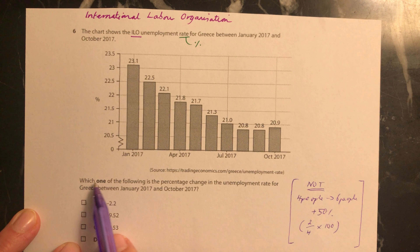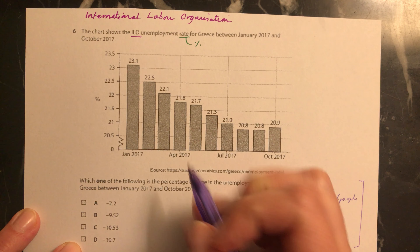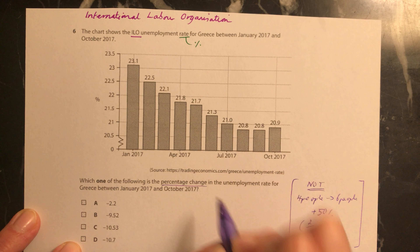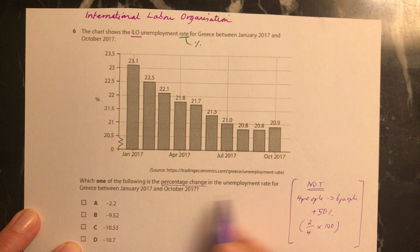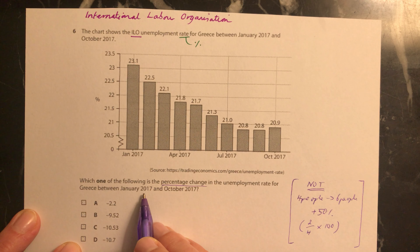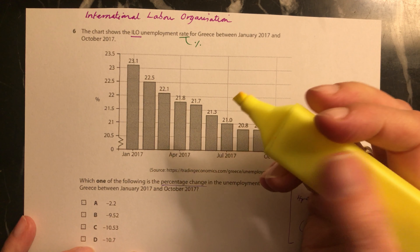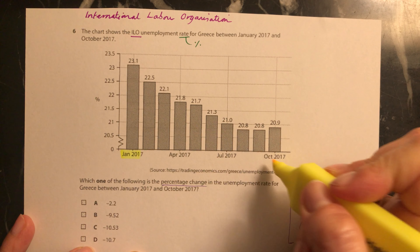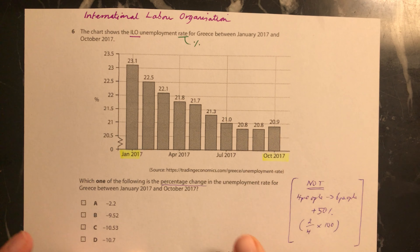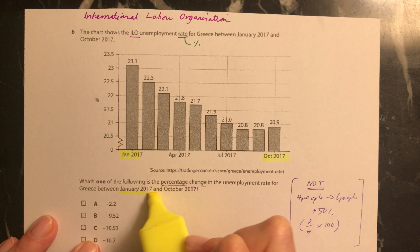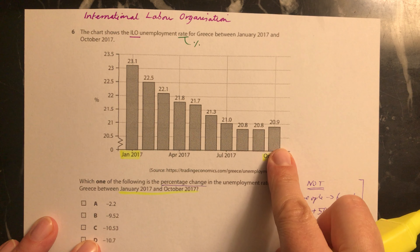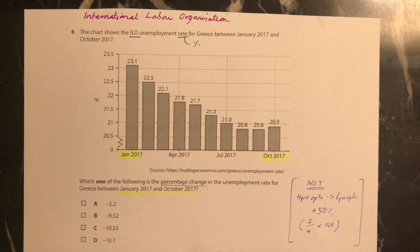We need to find which answer gives the percentage change in the unemployment rate for Greece between January 2017 and October 2017 — so we're going right from the beginning of the chart to the end. Be really careful, because sometimes they won't want you to look at the whole time period; they might just want you to look at part of it, so don't be caught out on that.